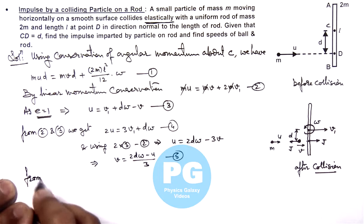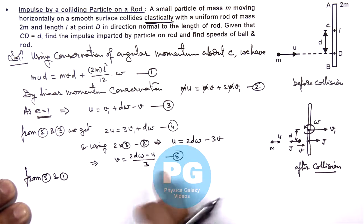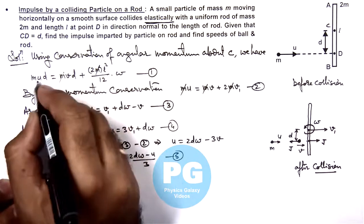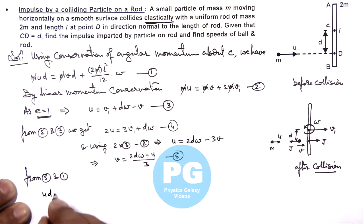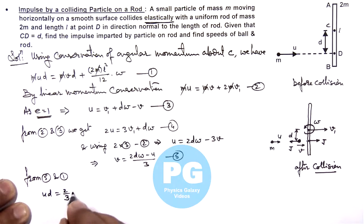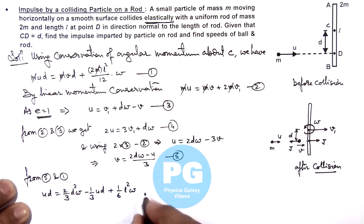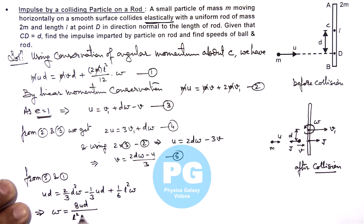Substituting the value of v from equation 5 into equation 1, and cancelling m, we get: u·d = v·d + (l²/6)·ω. Substituting v = (2d·ω − u)/3, and simplifying, we obtain the value of omega as ω = 8ud/(l² + 4d²).